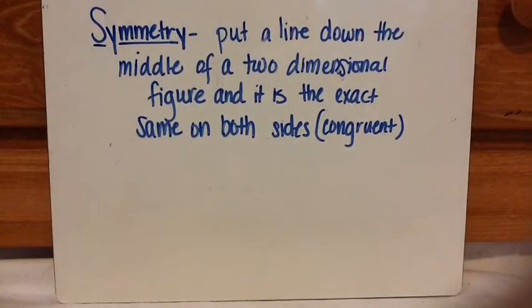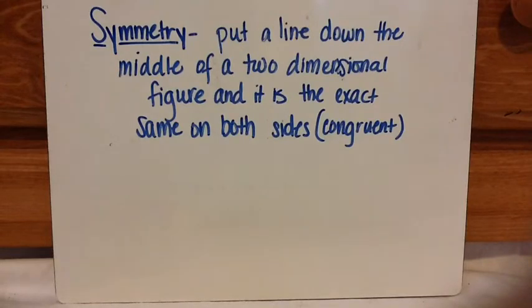Before I begin, let's go over the definition of symmetry. Symmetry is putting a line down the middle of a two-dimensional figure and it is the exact same on both sides. Basically meaning it's congruent. Congruent means same size, same shape.